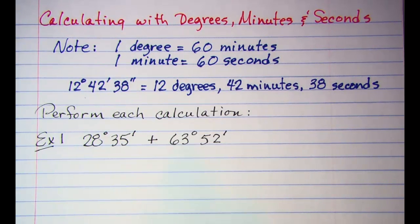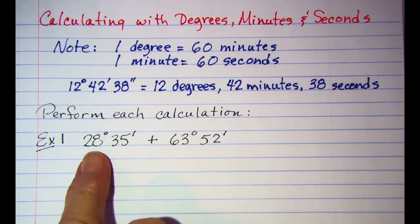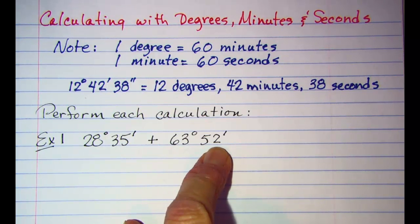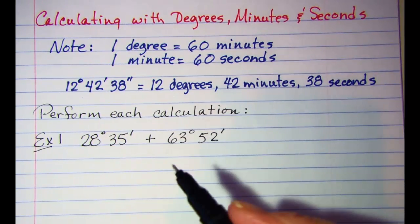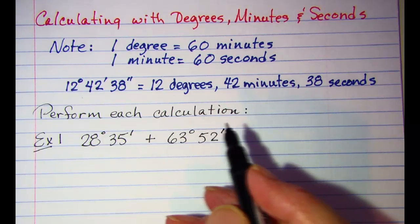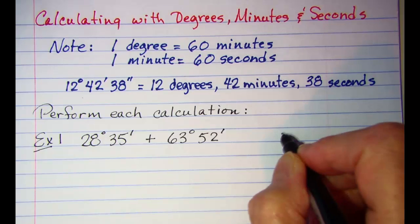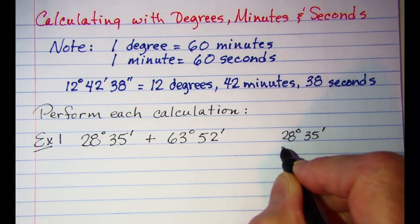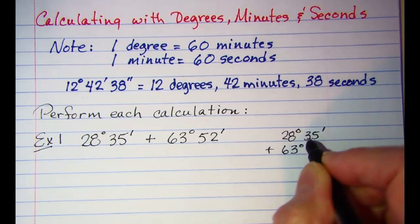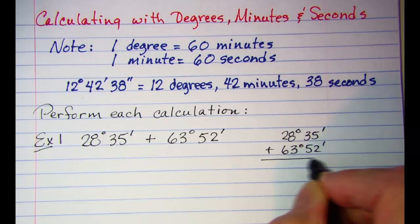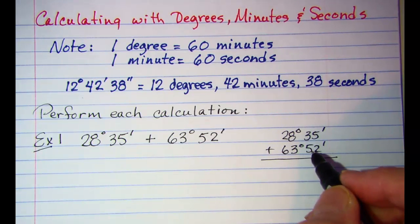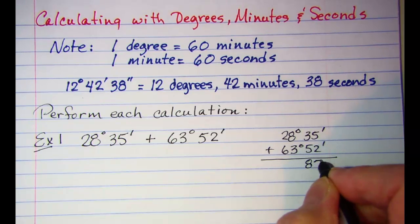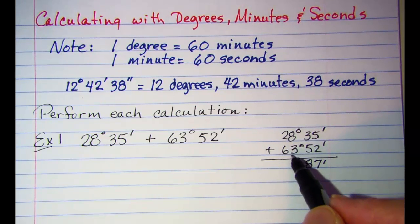The first example is to add 28 degrees 35 minutes to 63 degrees 52 minutes. When doing this calculation we need to add the degrees and the minutes separately. I'm going to write them vertically: 28 degrees 35 minutes added to 63 degrees 52 minutes. I'll go ahead and add the minutes first.